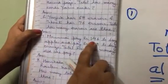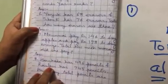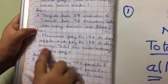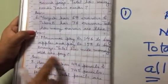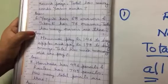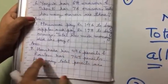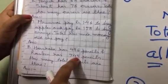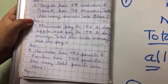Mrunmai pays one forty-six rupees to buy apples, and pays rupees one seventy-eight to buy orange. Total how much money did she pay? Alright. Very good. Harshada has four ninety-six pencils, and Rasleen has seven hundred and forty-five pencils. How many total pencils are there? Okay.